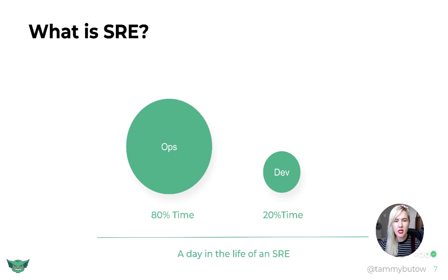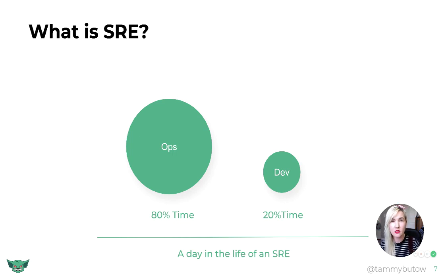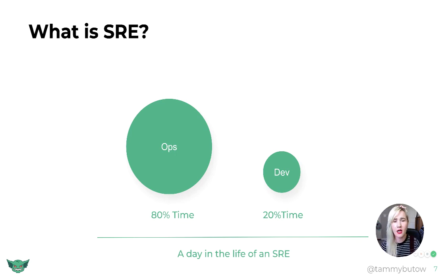Or it might look like this: you might be spending 80% of your time on ops work and only able to spend 20% of your time on dev work. This could be that you have a lot of manual work to do, a lot of incidents — maybe hundreds of incidents a week that you're resolving, flat out on-call, getting paged at all hours of the night, and you only really have a tiny bit of time to automate tasks that just annoy you.